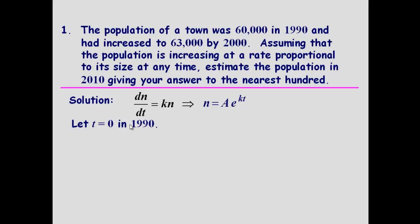At time 0, 1990, the value of n is 60,000. So if we put 0 in here, we get e to the 0, which is 1. So in other words, n is equal to A. So A equals 60,000.